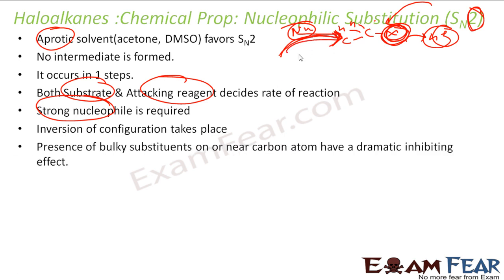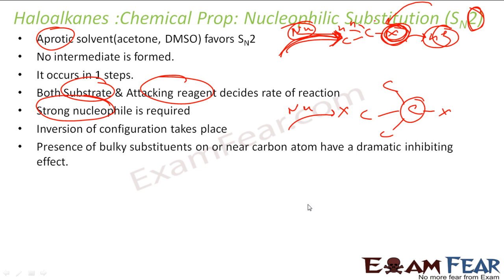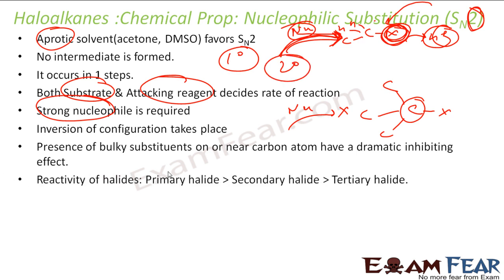The presence of bulky groups near the carbon atom has an inhibiting effect on SN2. If a carbon has three bulky groups, the nucleophile cannot attack from the back side. It is best if the carbon is primary (1°) or at most secondary (2°). Bulky groups are not advisable. That is why primary halides are more reactive in SN2 — there are no bulky groups. Secondary halides have some steric bulk, and tertiary halides have even more, making SN2 very difficult for tertiary substrates.